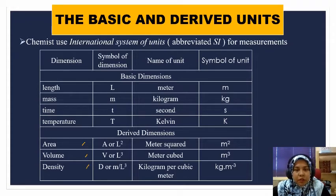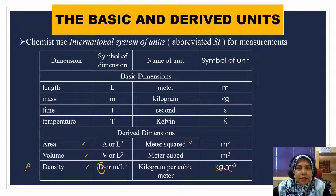Area, volume, and density - these are the derived dimensions, coming from the basic dimensions. Area, of course we know, is length times length, so it's meter square for the SI unit. Volume is length times length times length, so meter cubic. Density has symbol d, and the SI unit is kilogram per cubic meter.